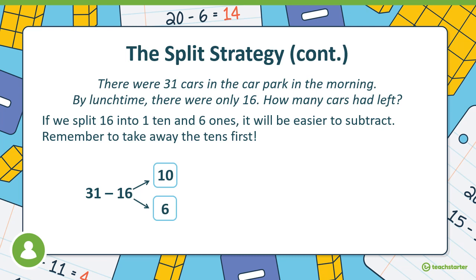If we split 16 into one ten and six ones it will be easier to subtract. Remember to take away the tens first. So 31 minus 10 equals 21, then 21 minus 6 gives us 15. So we get the answer 15.